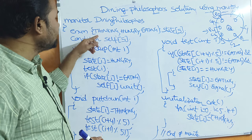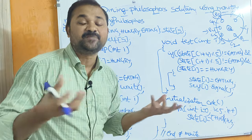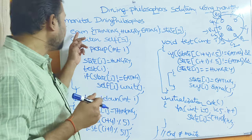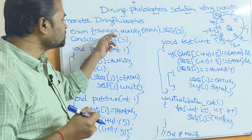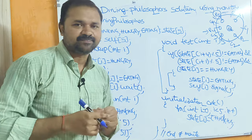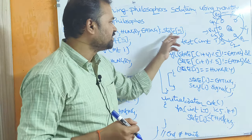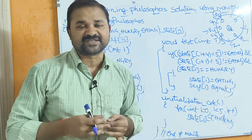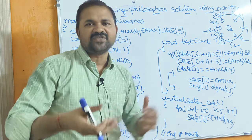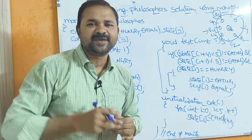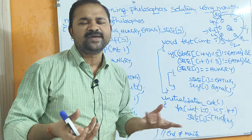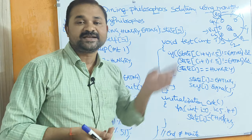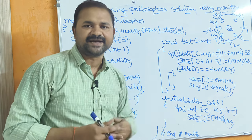We use 'enum' because a philosopher can have 3 possible states: thinking, hungry, and eating. Next, 'state[5]' is an array because we have 5 philosophers total. So state[0] means the state of the first philosopher P0, and state[4] means the last philosopher. The state may be either thinking, eating, or hungry.